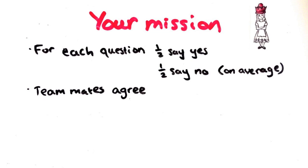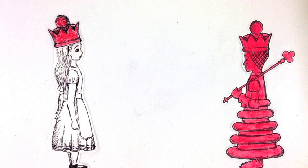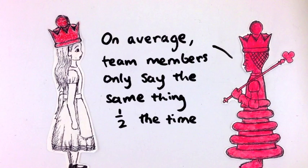You're about to start training your spies to make this happen when your boss comes in and tells you that she wants you to ensure one more thing. She says that you ought to make sure that on average team members only say the same answer half the time.